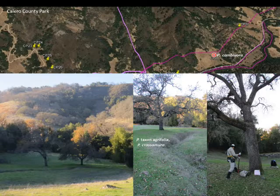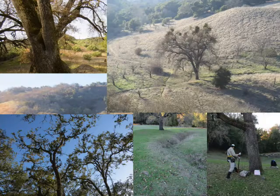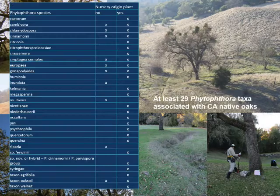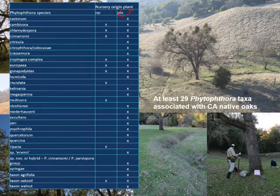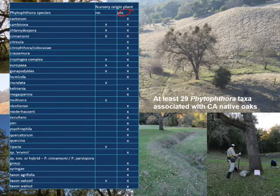What is a little alarming in all these oak woodland findings is that we do have at least 29 Phytophthora taxa that we have found associated with California native oaks. Many of these are known only from plants of nursery origin, but a number have also been found in native habitats. So the possibility that many of these others found in nursery stock can work their way into native habitats is a cause of concern.